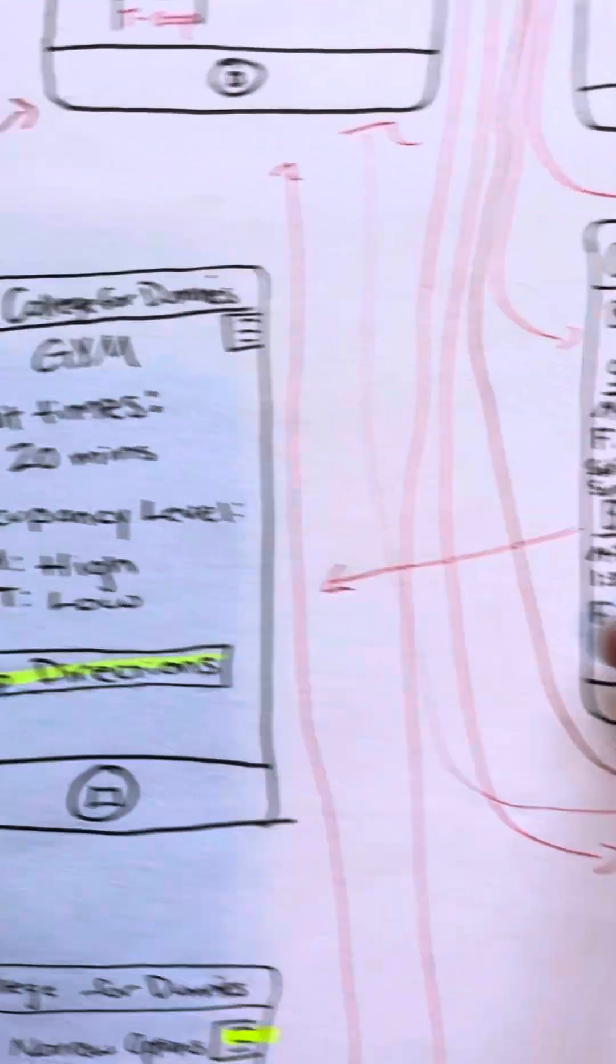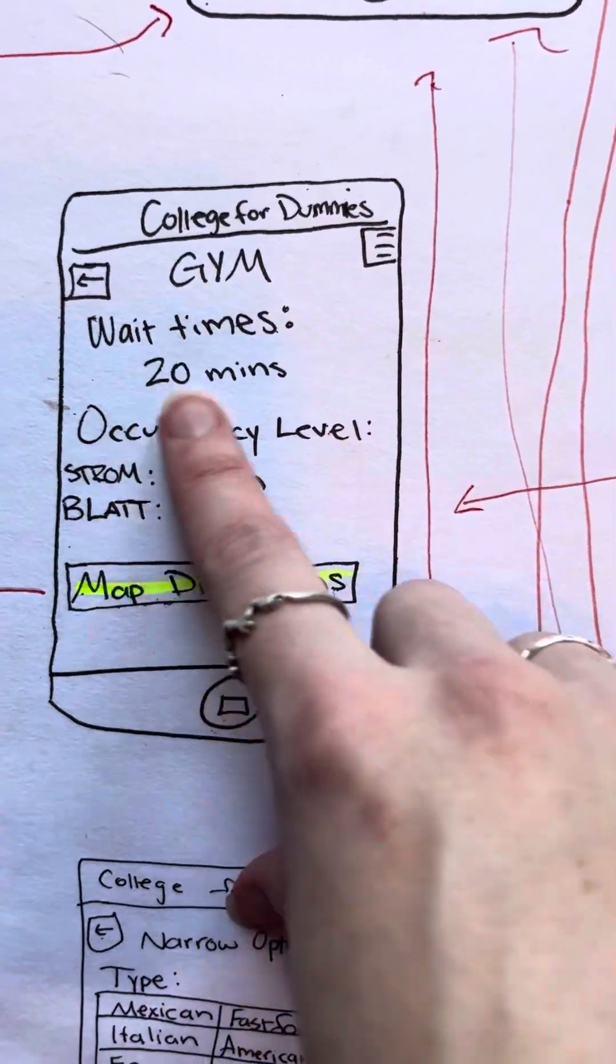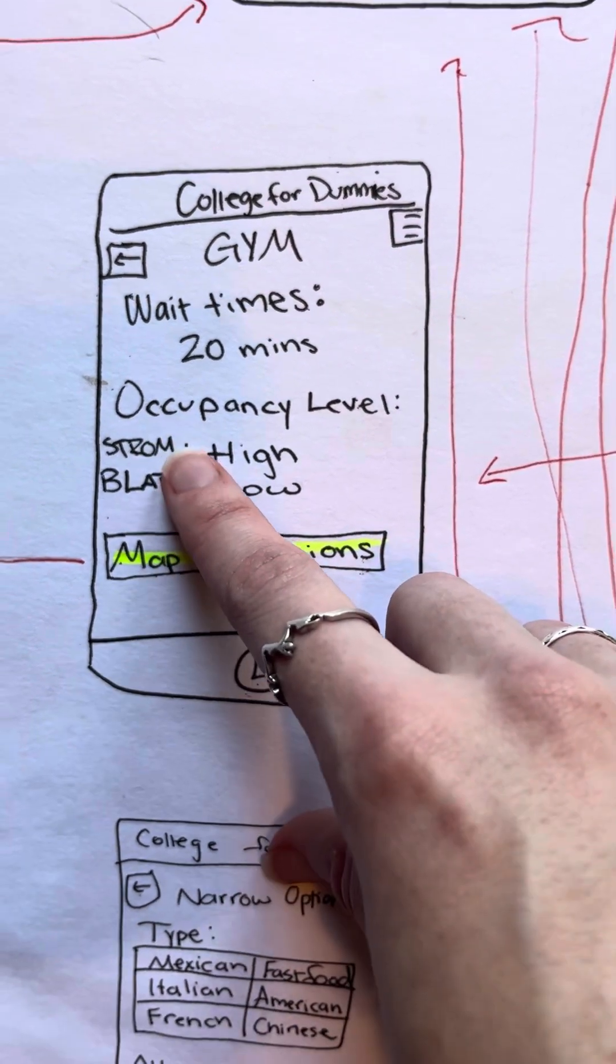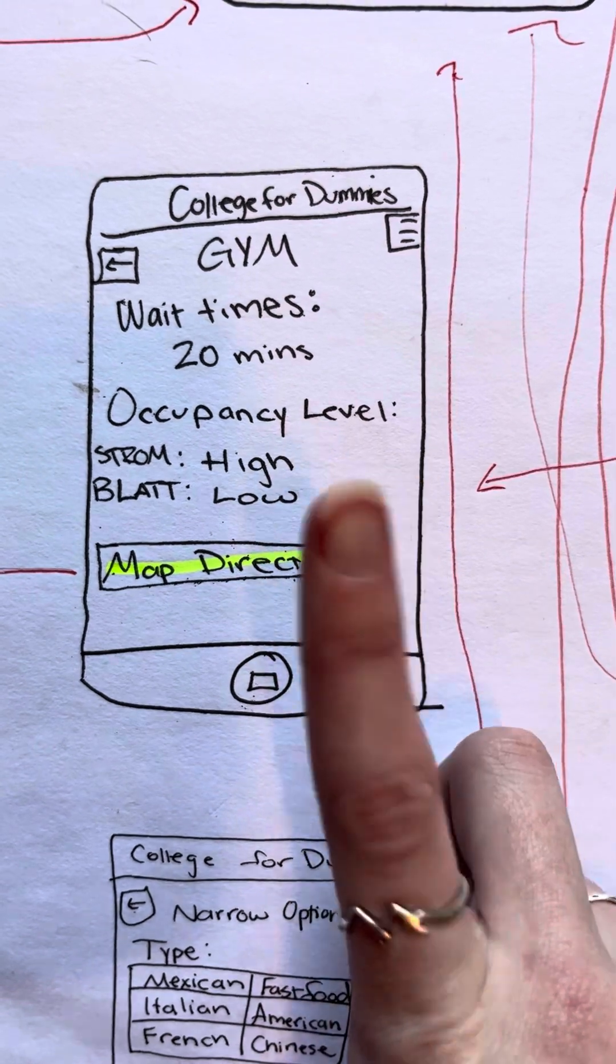You can then scroll down and see the wait times for machines. You can also see the occupancy level in those gyms, and if you need directions, you can map directions.